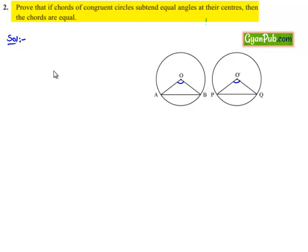Therefore, let us note the information that there are two congruent circles given with centers O and O', and here also given that angles subtended by the chords at the center are equal. Therefore, here we can say that angle AOB is equal to angle PO'Q.